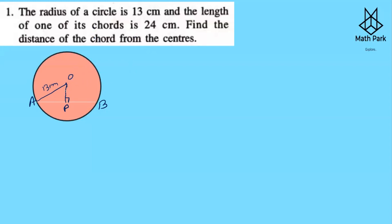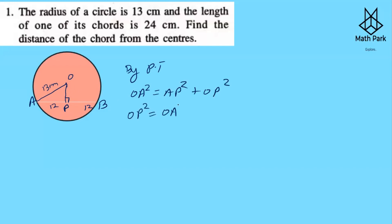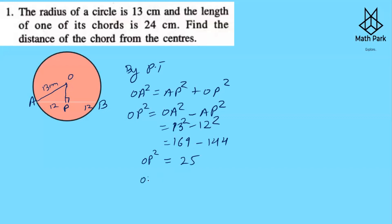The length of the chord is 24 centimeters. Since the perpendicular from the center bisects the chord, half of 24 is 12, so AP = 12. By Pythagoras theorem: OA² = AP² + OP², so OP² = OA² − AP² = 13² − 12² = 169 − 144 = 25. Therefore OP = √25 = 5 centimeters. The distance of the chord from the center is 5 centimeters.